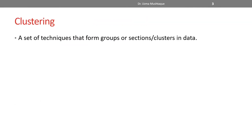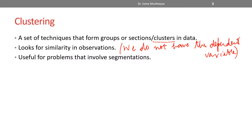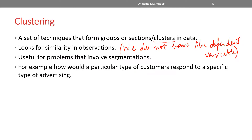So in general, what is clustering? It is a set of techniques that form groups, sections, or clusters in data. We look for similarity in observations. One thing to remember is that we do not have a right or wrong answer — we do not have a dependent variable. We are still trying to find patterns in data based on the features we have. It's really useful for problems that involve segmentation, and one common real-world application is finding how a particular type of customer will respond to a specific type of advertising — basically segmenting them into different categories based on their features.